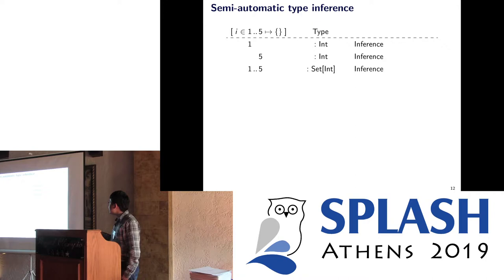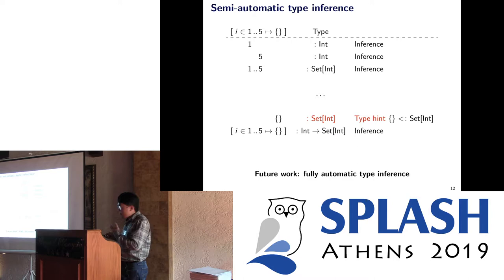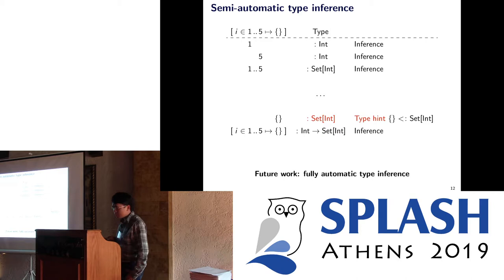For this type system we implemented a semi-automatic type inference engine. For example, this expression is a function from integer to the empty set. Our engine knows that one and five are integers and a set from one to five is a set of integers, but for the empty set it fails — the empty set can be a set of integers or a set of strings. In that case we require a type annotation from the user. If the user provides the annotation such as 'set of int', our engine can infer the type of the whole expression as a function from int to set of int. For future work we are developing a fully automatic type inference.